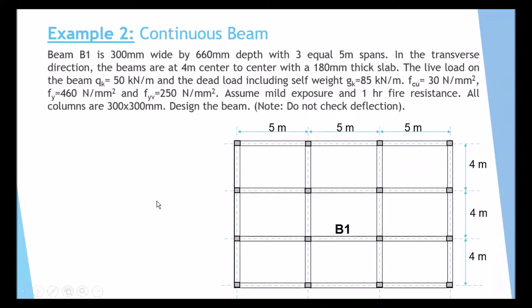Let's read this example together and see what is required. B1 is 300 millimeter wide by 660 millimeter depth. The dimensions are given in the problem, so you don't need to go to the initial proportion step to calculate dimensions — no need to start from scratch, just follow what is given. With three equal spans of five meters, one, two, three spans. The beams are four meter center to center.